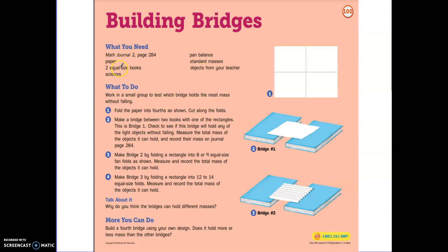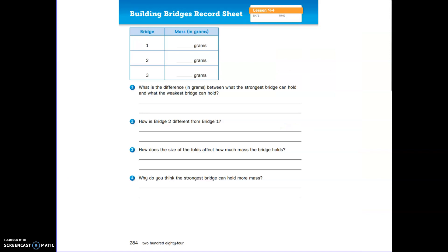The piece of paper you get is just a regular piece of paper, could be computer paper or loose leaf paper. Fold the paper into fourths as shown here. Cut along the fourths. Make a bridge between the two books with one of the rectangle pieces. This is bridge one. Check to see if this bridge will hold any of the light objects without falling in between the books. Measure the total mass of the objects it can hold and record their mass on page 282.